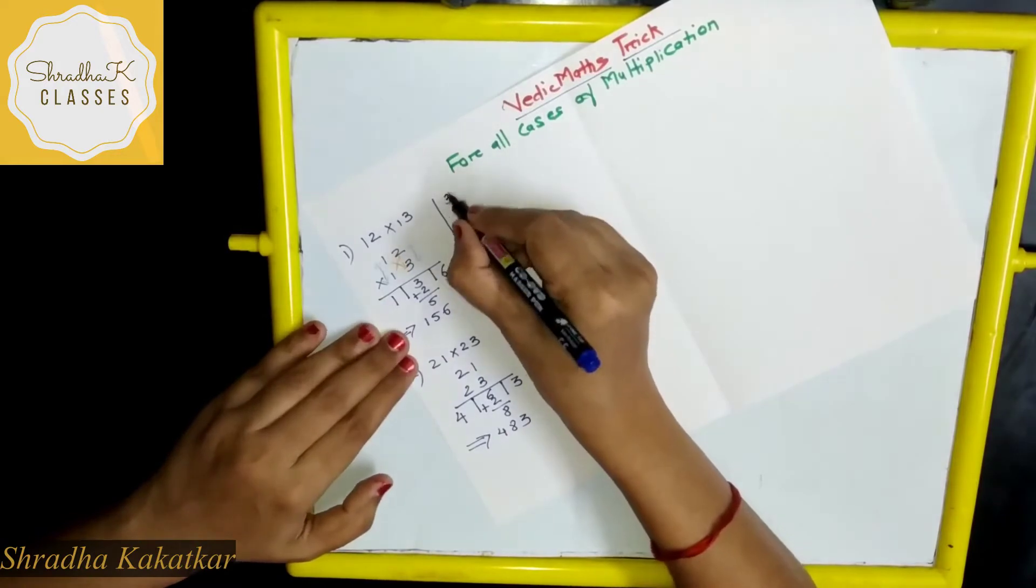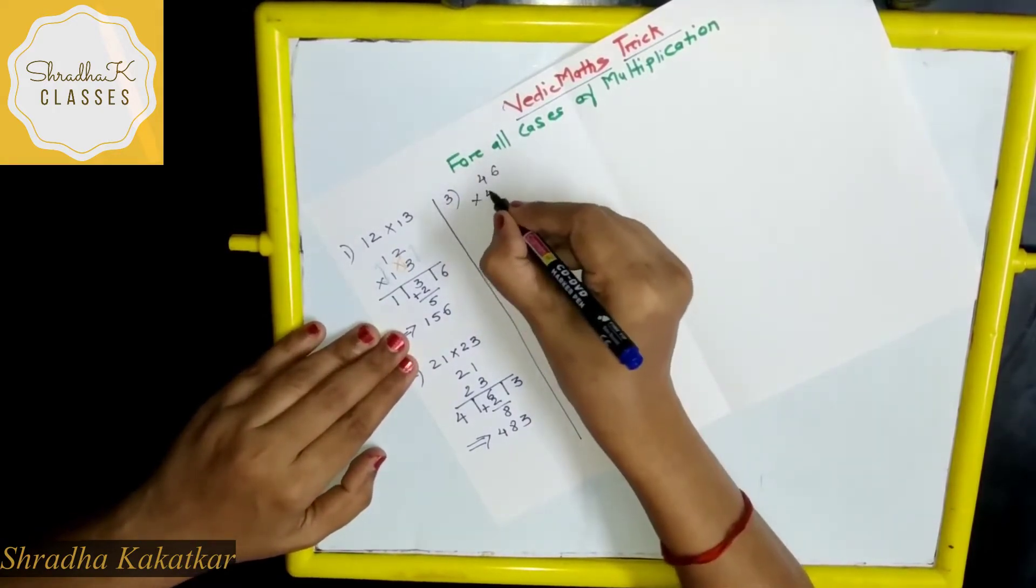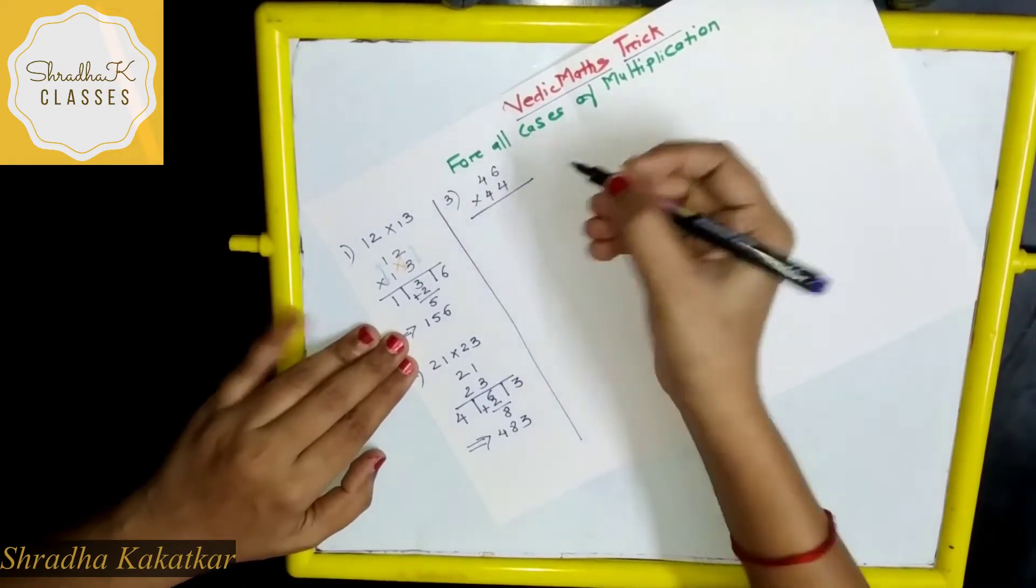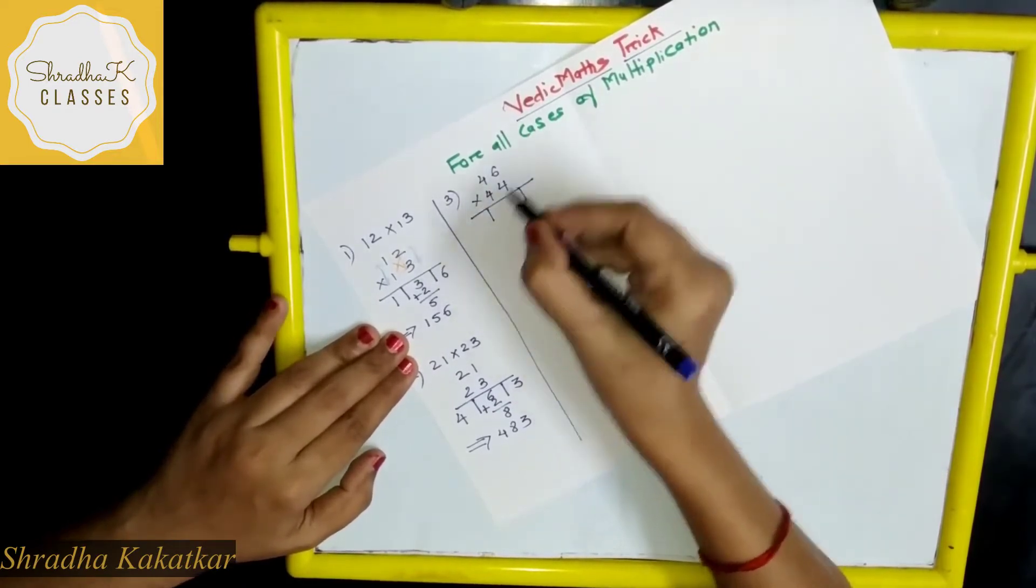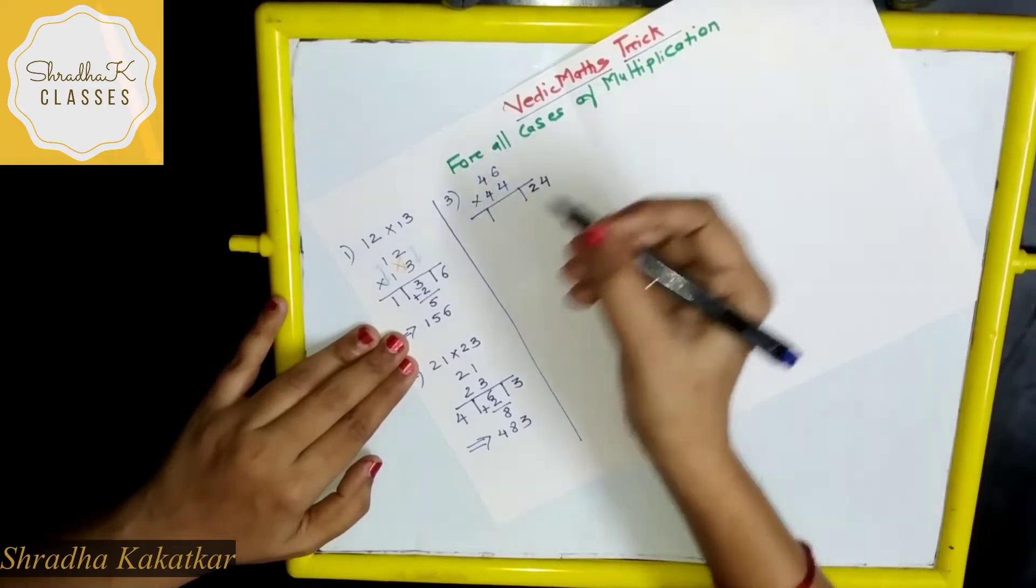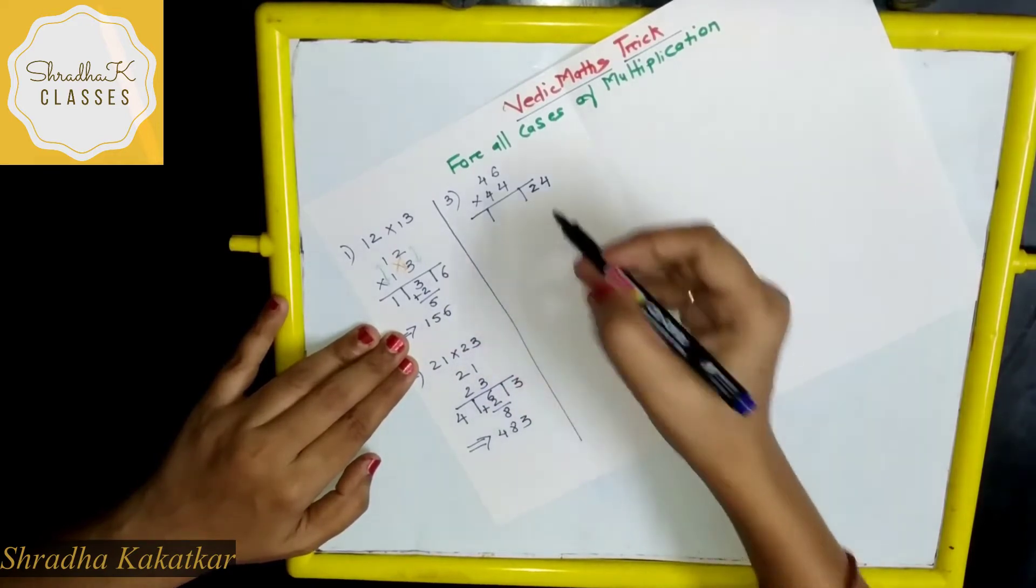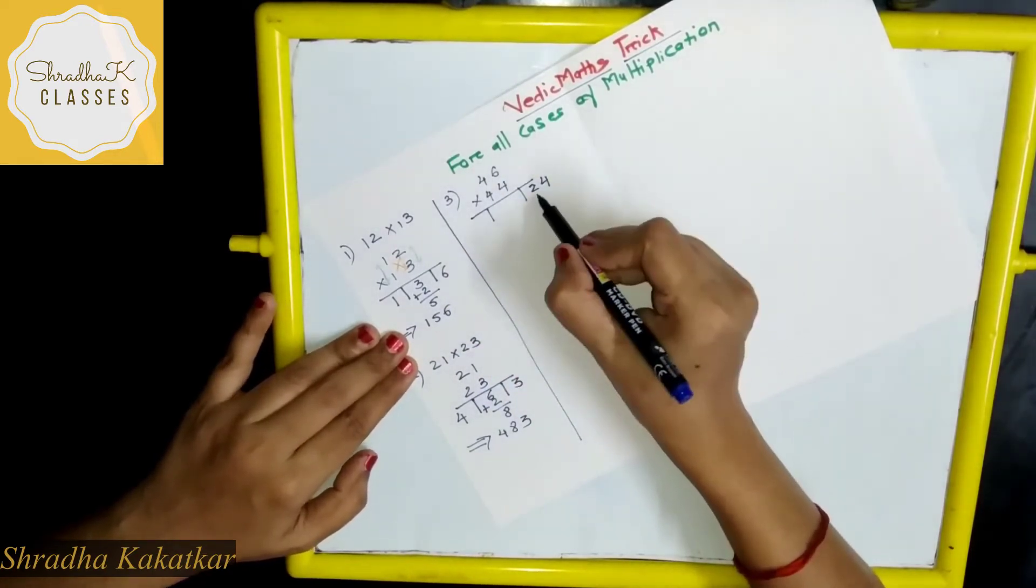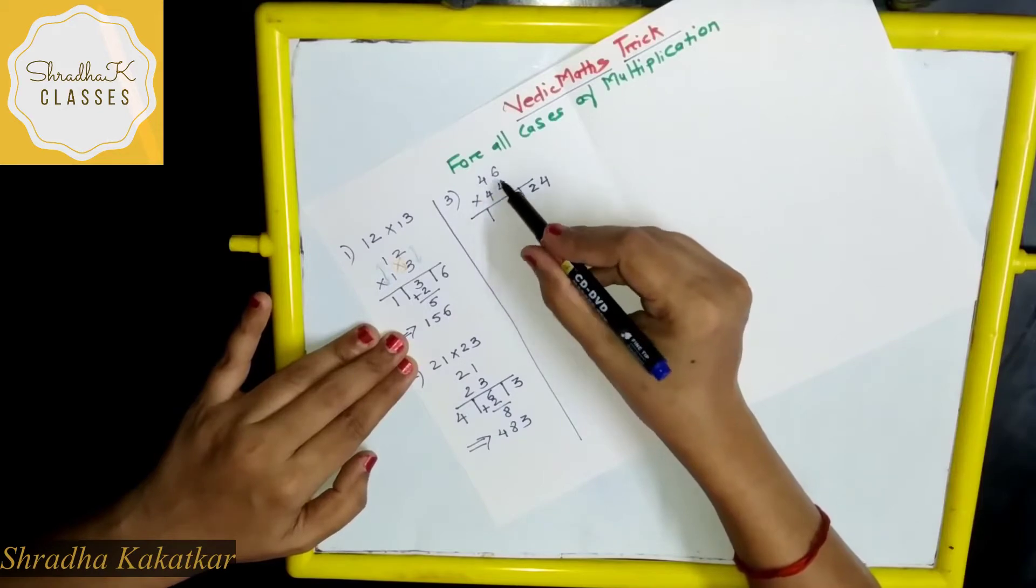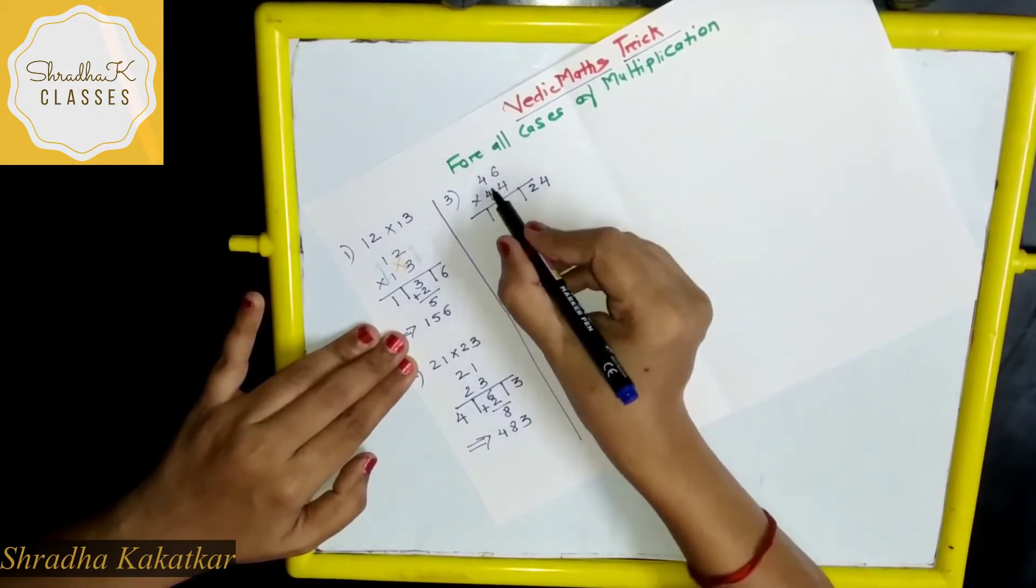Let's take third example. 46 into 44. So what you will do? Again divide this. 6 into 4, 24. Now see, here we got 2 digit number. Here we have got single digit, so we didn't carry forward. Now here we will have to carry forward. So you have to remember this. We got double digit number here.